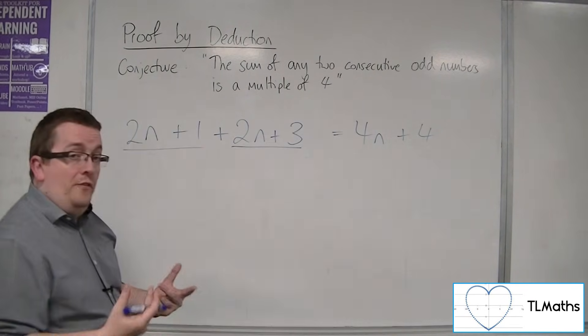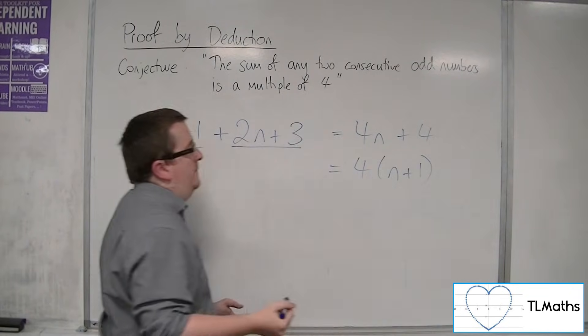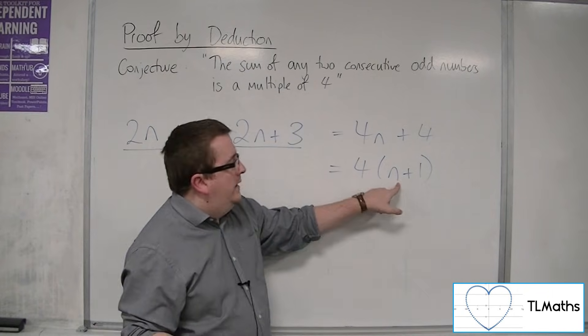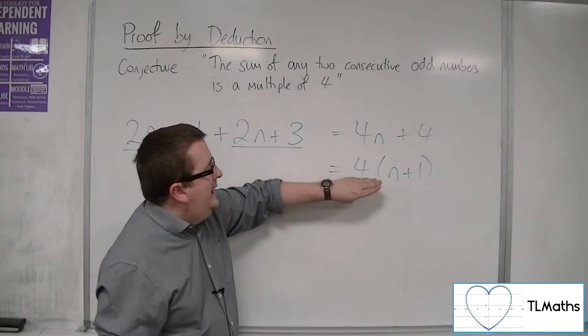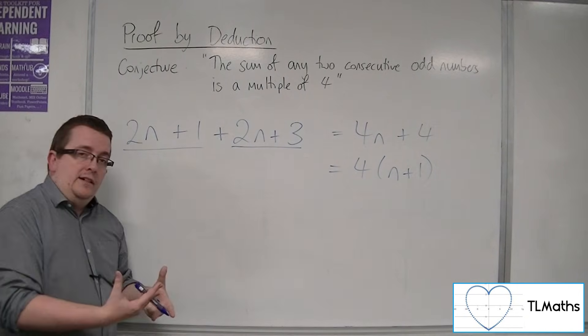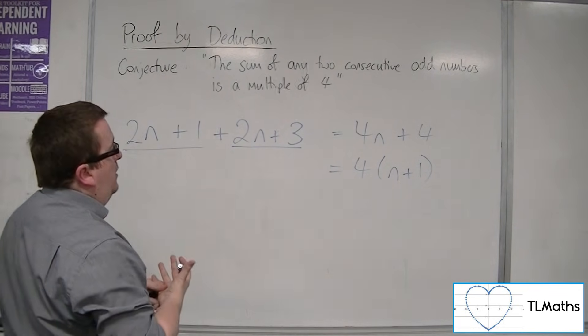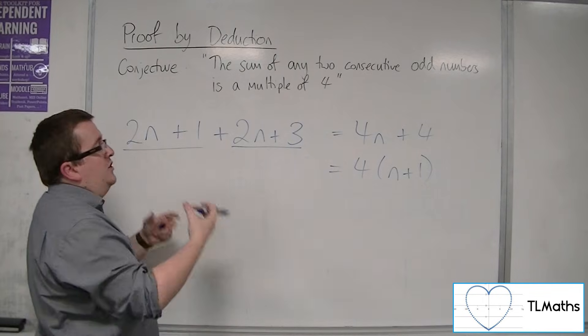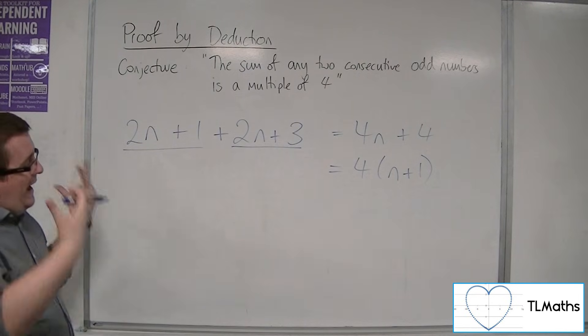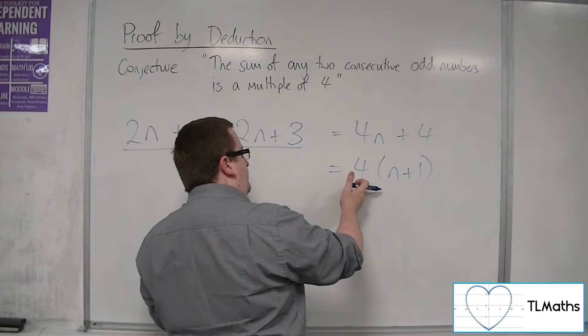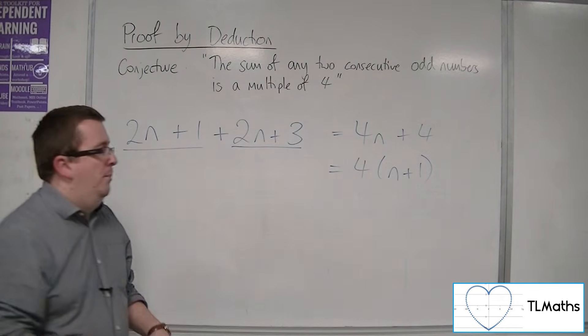I have now something that I can factorize, because I can factor the 4 out of a single bracket. Now, n is any whole number, so n+1 is a whole number. Clearly, 4 is a factor of our number. Regardless of any two consecutive odd numbers that you start with, if you add them together, we definitely get a number that has 4 as a factor, and so it must be a multiple of 4.